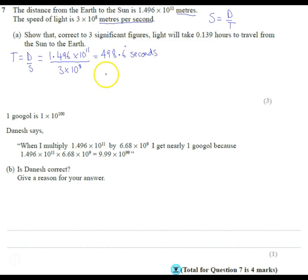So if you divide it by 60, it's going to give us 8.31 recurring minutes.